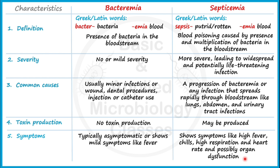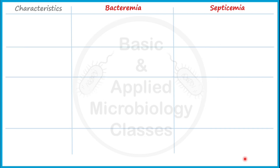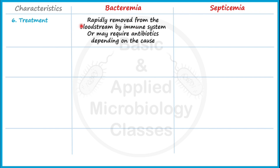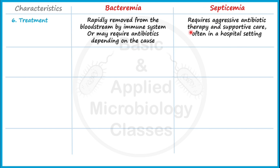The sixth point of difference is treatment. In case of Bacteremia, the body can recover on its own — Bacteremia can be rapidly removed from the bloodstream by the natural immune system. If it shows some mild severity, it may require antibiotics depending on the cause. Septicemia, however, always requires aggressive antibiotic therapy and supportive care, often in hospital settings, and always represents a medical emergency.